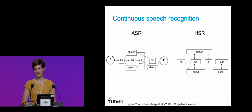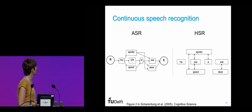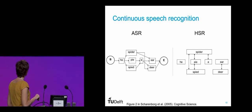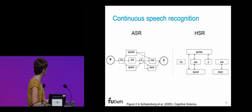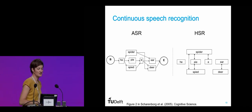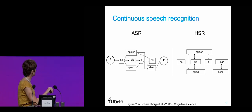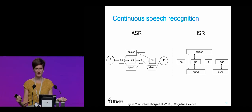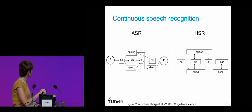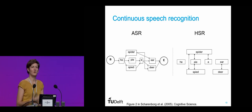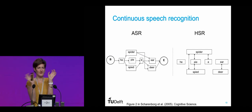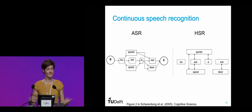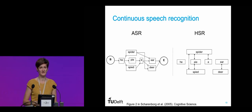Looking at continuous speech recognition: in an ASR system you have a begin node and end node, with paths through a search space, and basically you compute the cheapest path through this graph — that's what you recognize. In human speech recognition, we think of speech recognition as words being activated in the human brain while we're listening. Words compete with one another — words like 'spider', 'pie', and 'spide' overlap in sounds and use the same chunk of acoustic signal. The task of the human brain is to create a sequence of words that uses the entire acoustic signal and makes sense.